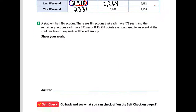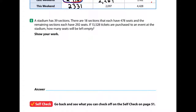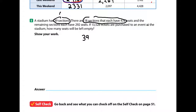Alright, last one — number 5. It says a stadium has 39 sections. There are 18 sections that have 478 seats, so that's 18 of the 39 sections. The remaining sections have 292 seats each. If 13,528 tickets are purchased to an event at the stadium, how many seats will be left empty? Let's think about this one and put our information together.